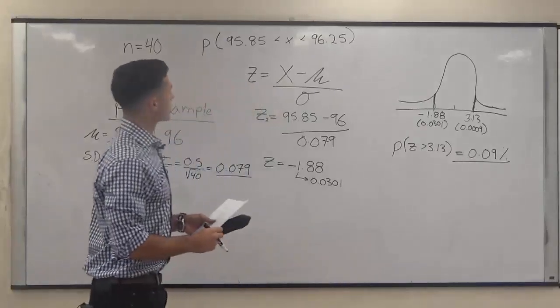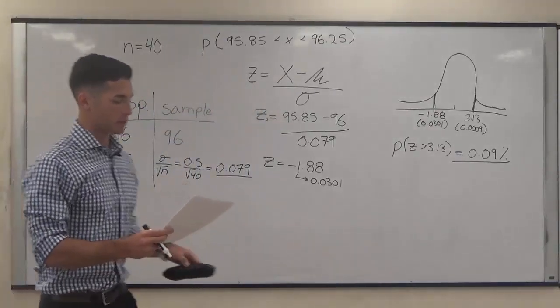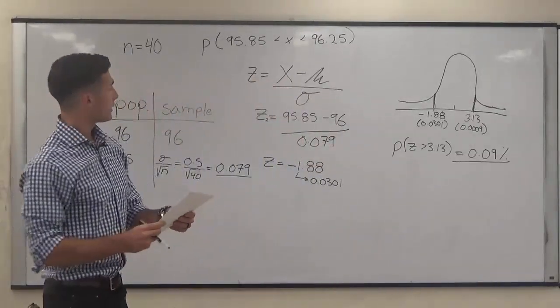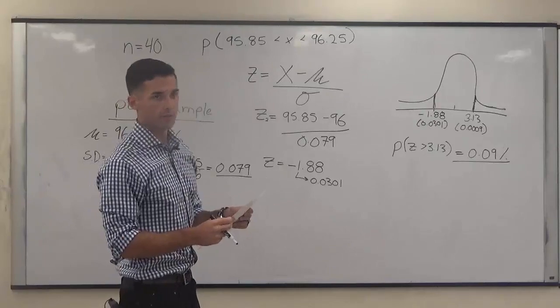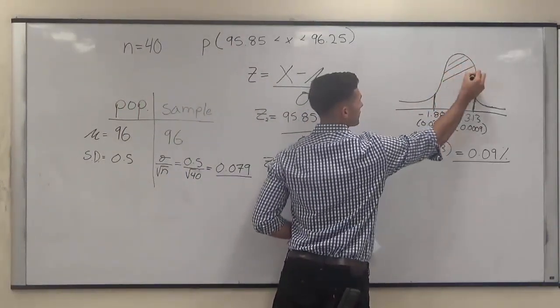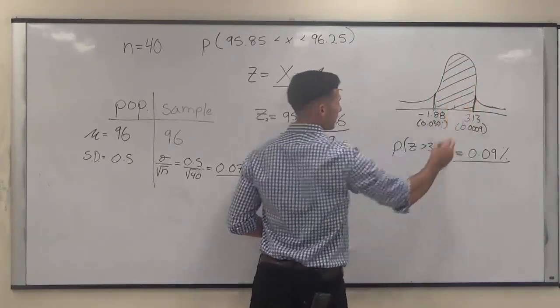So from here, what it's asking is the probability that it's between 95.85 inches and 96.25 inches. So what we're looking for is this right here, the probability that x is in here.